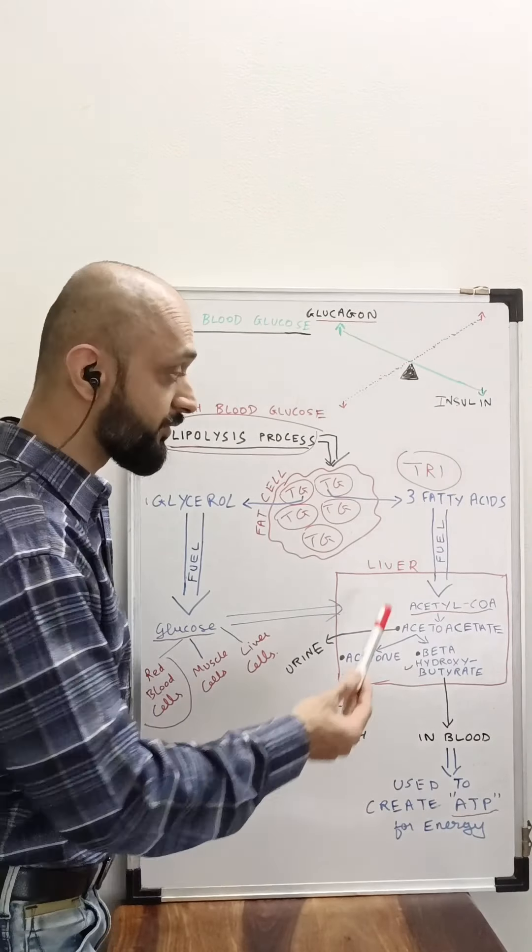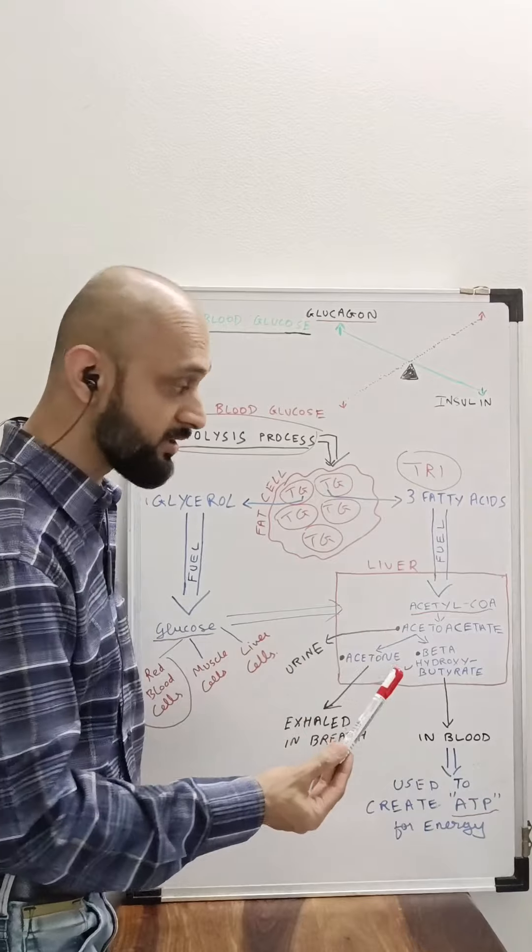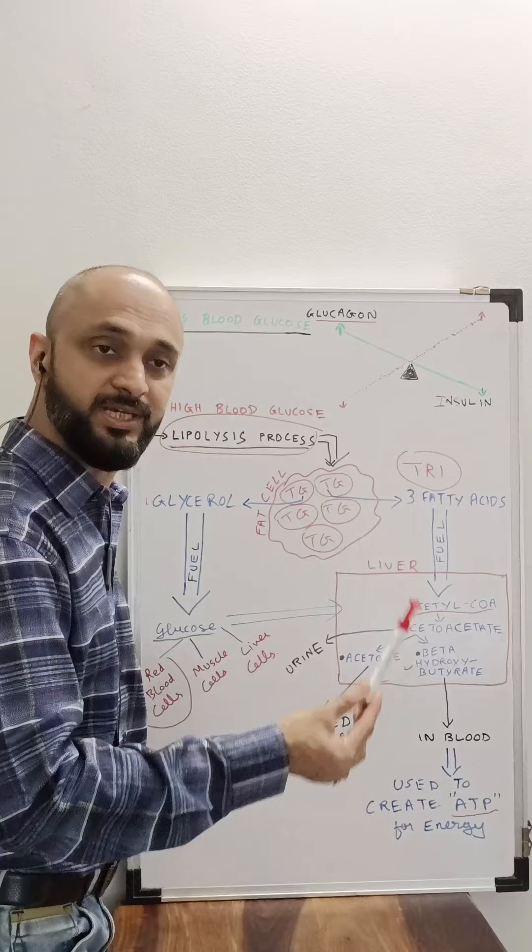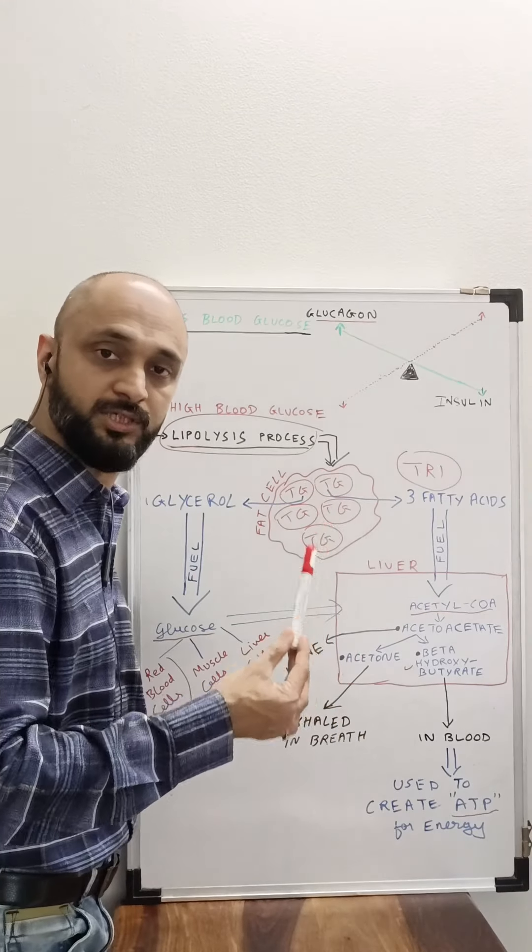These three are different ketone bodies, and since when a person is having a diet rich in fat and protein and deprived of glucose, this is the process which continuously happens, and that is what is ketosis.